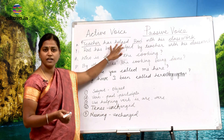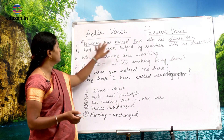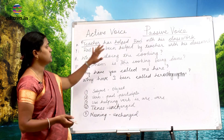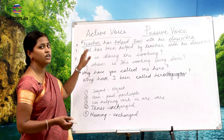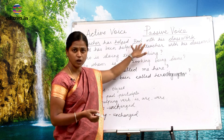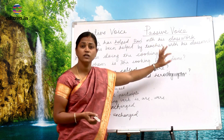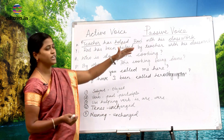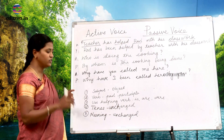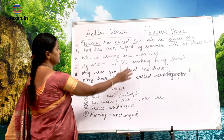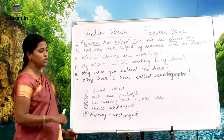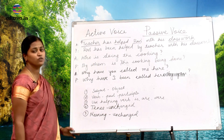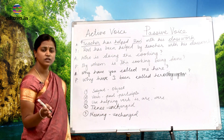Consider the example: 'Teacher has helped Ravi with his class work' — this is in present perfect tense. Held is the action done by the teacher; that is the verb. Whom did the teacher help? The teacher helped Ravi. So Ravi is the object, not the class work. Applying Rule 1, subject and object are interchanged, so Ravi takes the place of the subject and the sentence starts with Ravi.